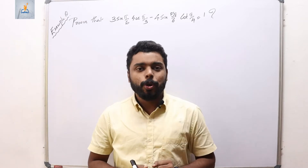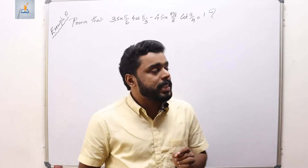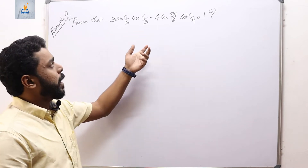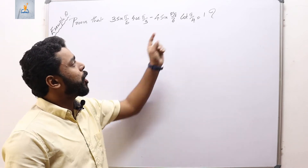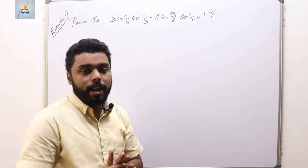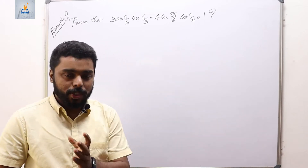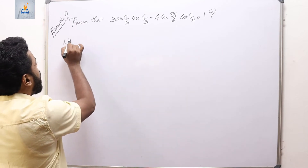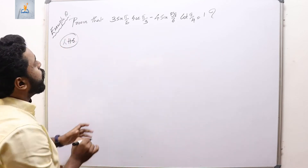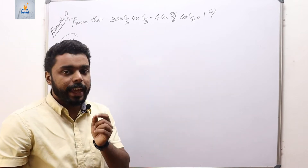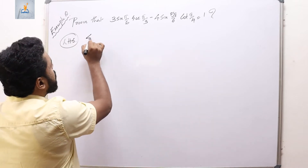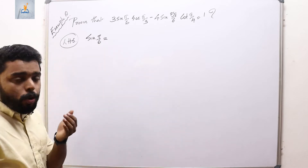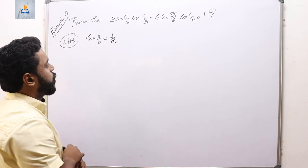Example number 10: prove that 3·sin(π/6)·sec(π/3) − 4·sin(5π/6)·cot(π/4) = 1. We consider the left-hand side first. We find each term: sin(π/6) = 1/2.